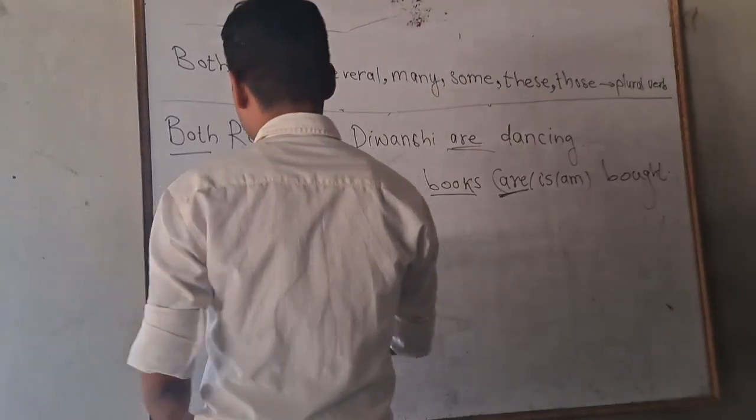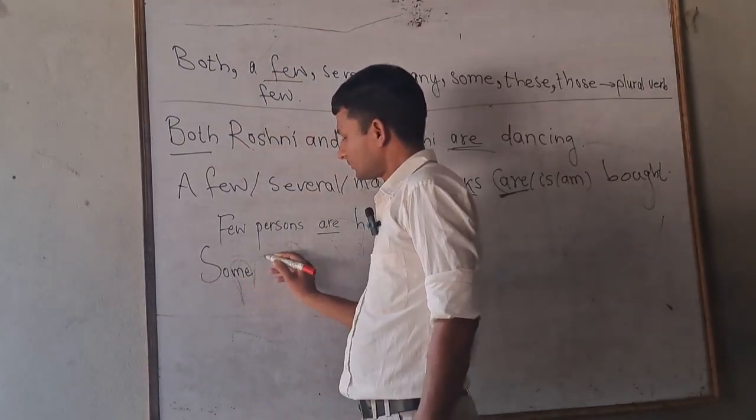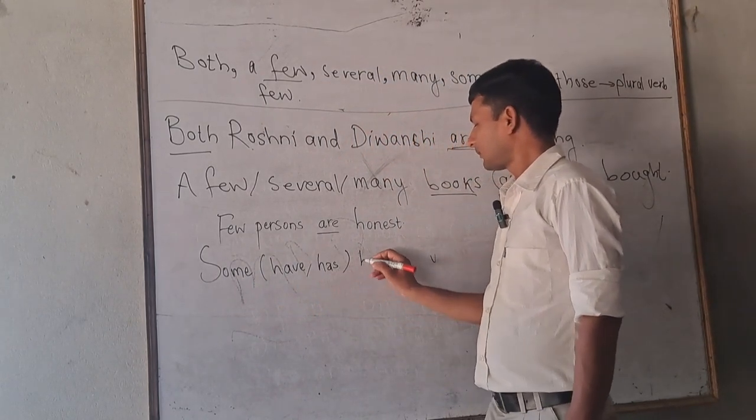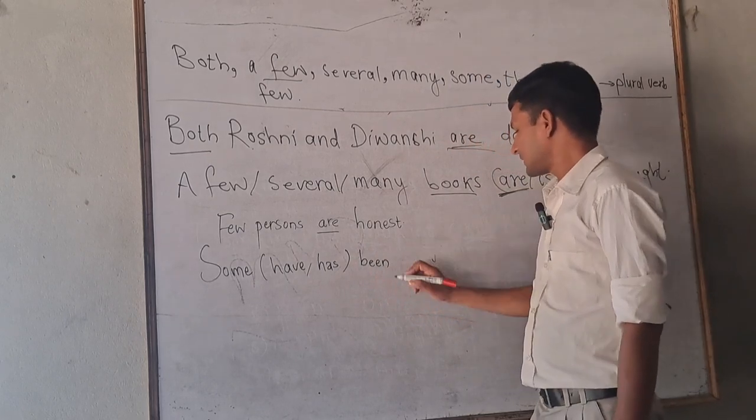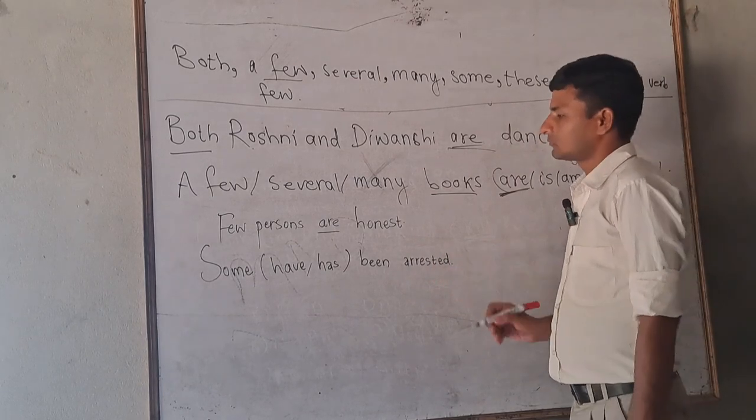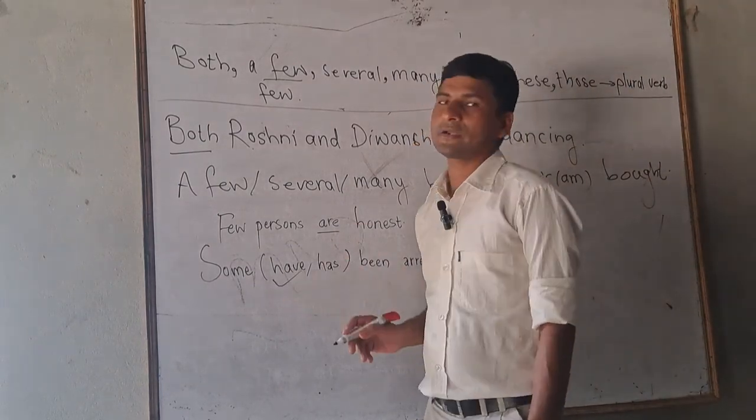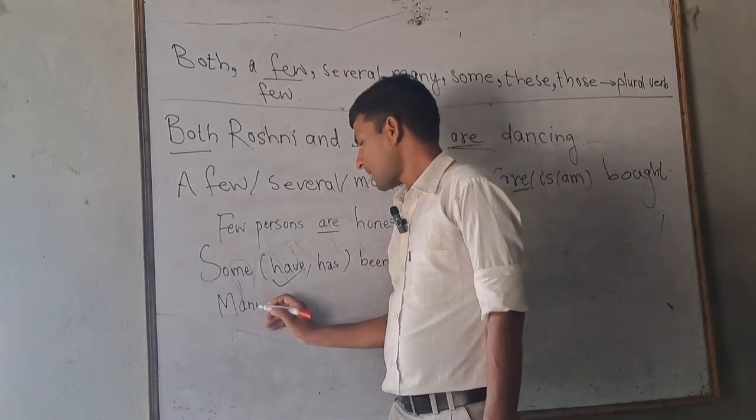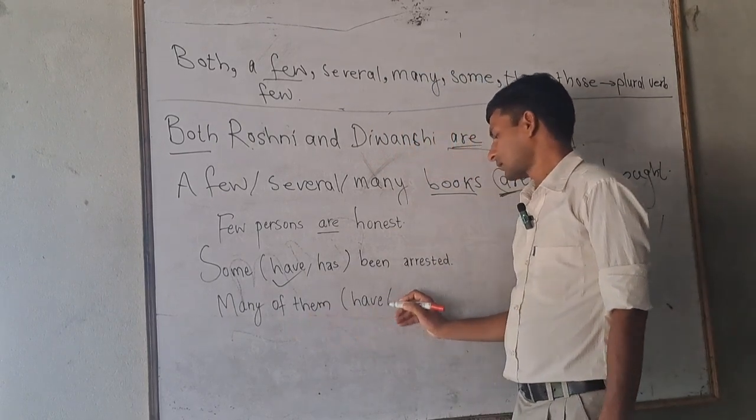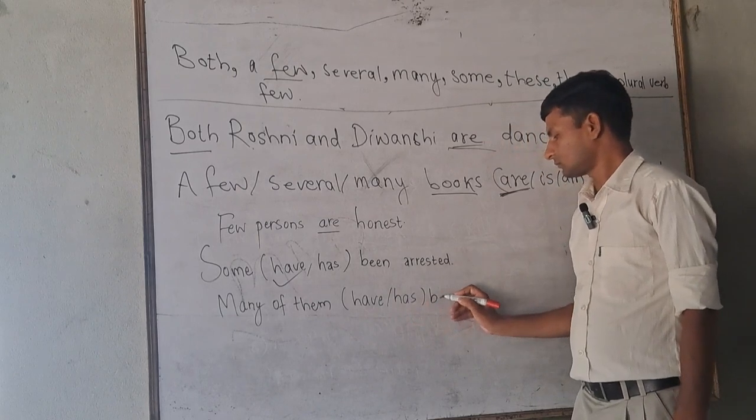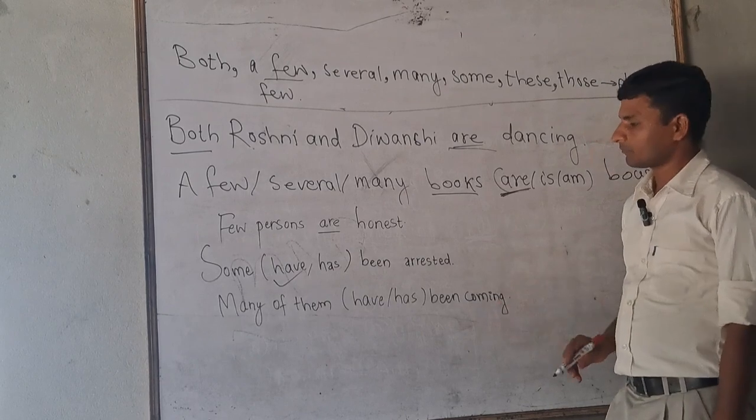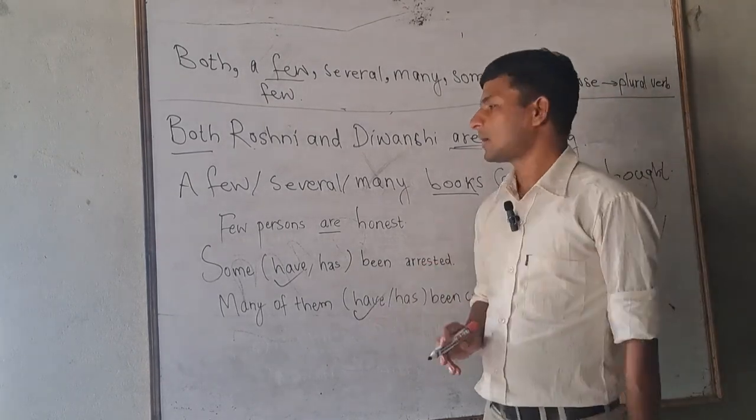You say some have been arrested. Some have or has been arrested. What is the correct answer? Some have been arrested. Many of them. Many of them have been coming.